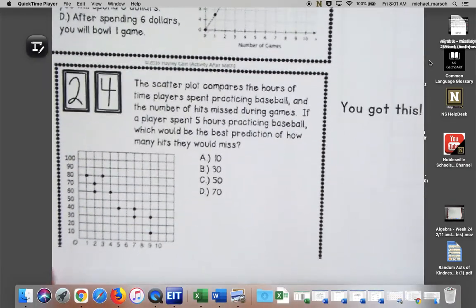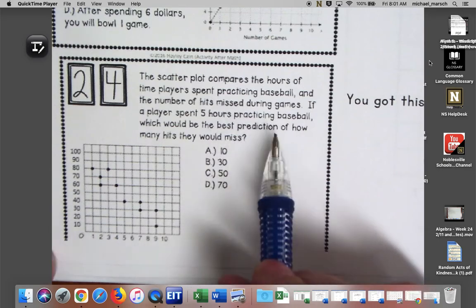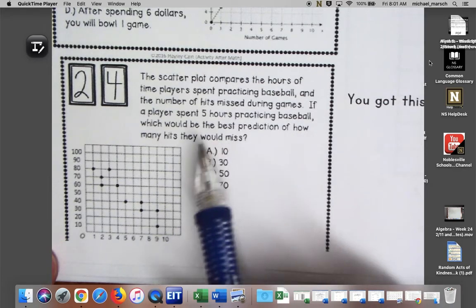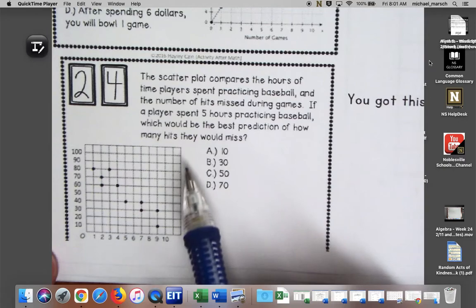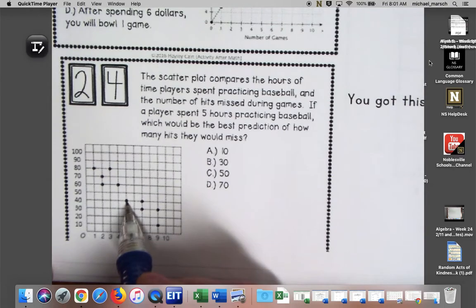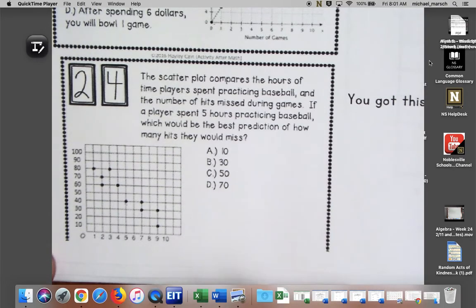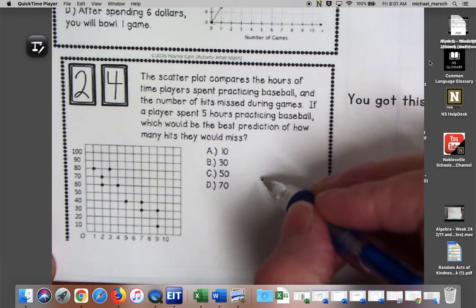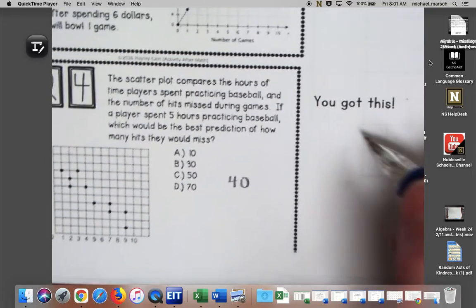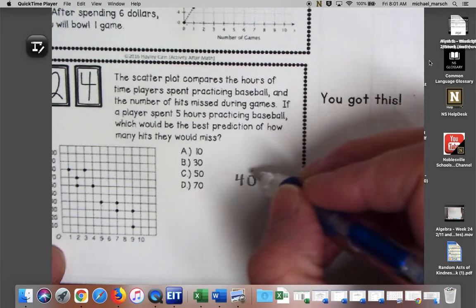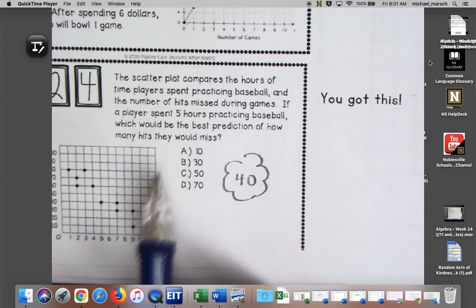Number 24, the scatter plot compares the hours of time players spend practicing baseball and the number of hits missed during games. If a player spent five hours practicing baseball, which would be the best prediction of how many hits they would miss? Let's go over to five hours of baseball. Maybe they would miss 40 hits, and that's not even an option here. Hopefully you saw that that wasn't an option. I can't believe I wrote 'you got this' because you don't got this because the answer is not there.